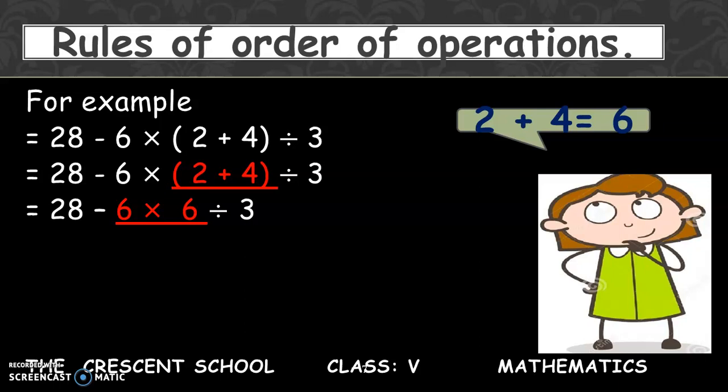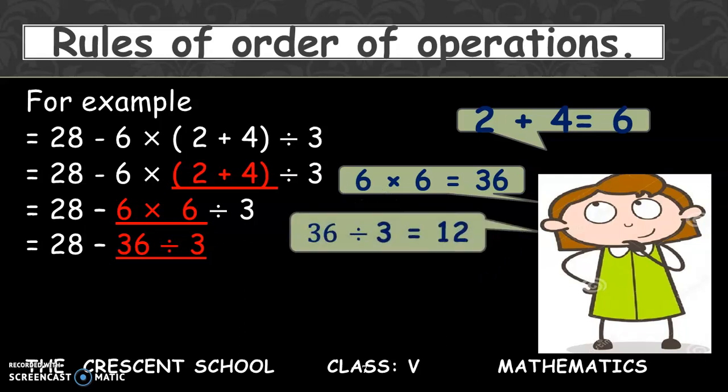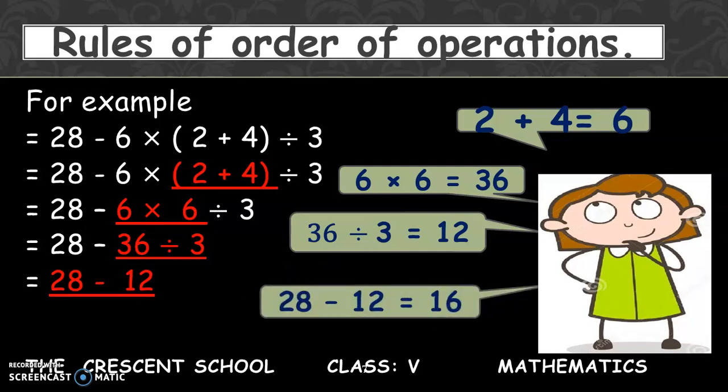We have multiply, divide, and minus. It means first of all you have to solve multiply or divide. Multiply comes first. So 6 multiply by 6 is 36. Our expression is 28 minus 36 divided by 3. Then now there are minus and divide. It means you have to divide first according to the rule. So 36 divided by 3 equals 12. Now 28 minus 12, and its sum is 16.